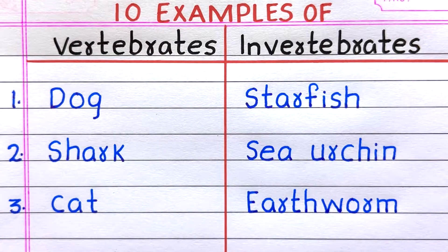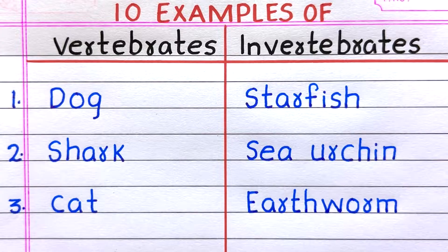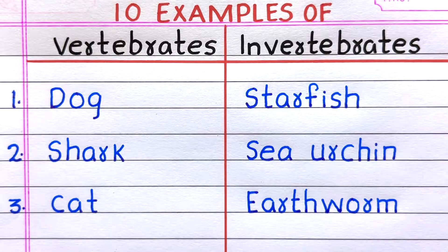First example of a vertebrate animal is dog. Second, shark. Third, cat.